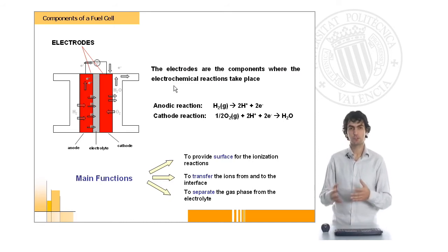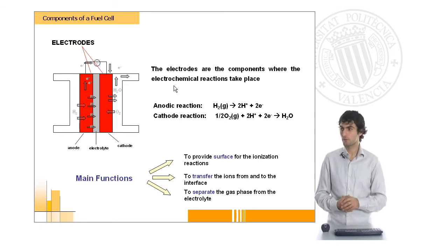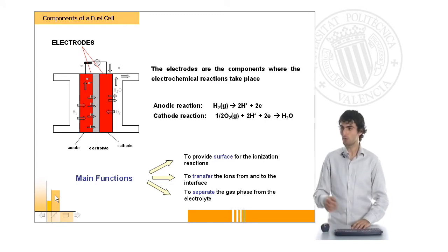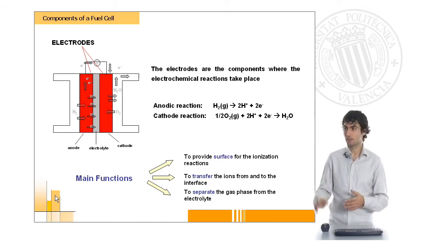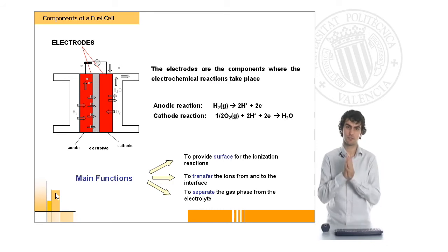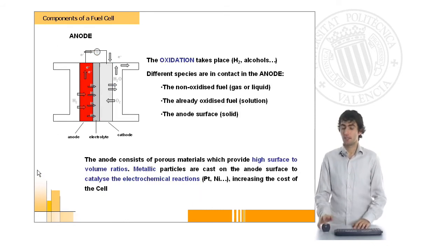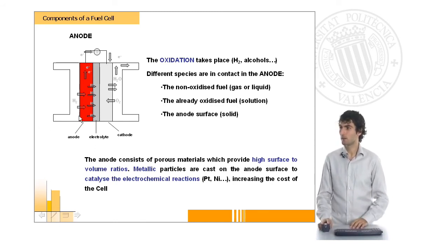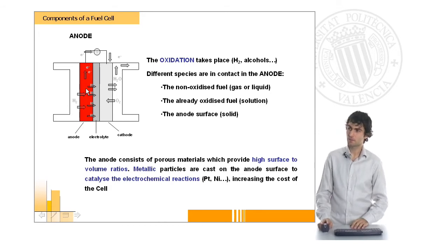As we said before, the electrodes are probably the most important part of the fuel cell because the electrochemical reactions are going to take place on their surface. The main functions of electrodes are to provide surface for those reactions, also to transfer the ions from and to the interface with electrolyte, and basically also to separate the gas phase from the electrolyte phase which is the central part of the fuel cell. In the anode we will see the oxidation taking place of the fuel coming here.